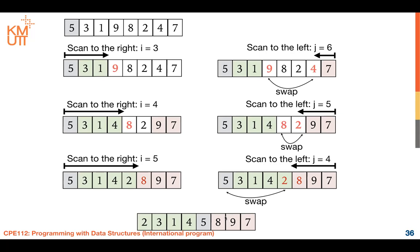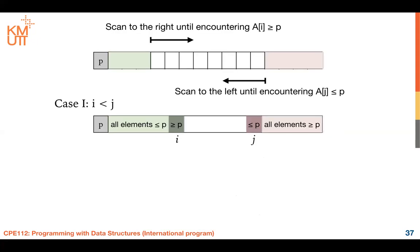We use Hoare's algorithm — C.A.R. Hoare. When we talk about QuickSort, it was developed by Hoare, and this partitioning algorithm was also developed by Hoare. In conclusion: first, select a pivot and scan to the right until element at i is greater than P. Then scan to the left until encountering element at j less than or equal to P. If i is still less than j, swap the elements and continue scanning.